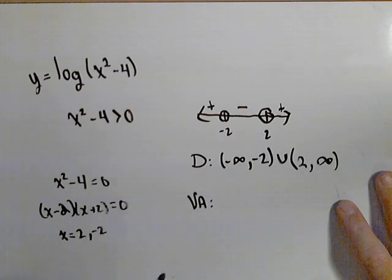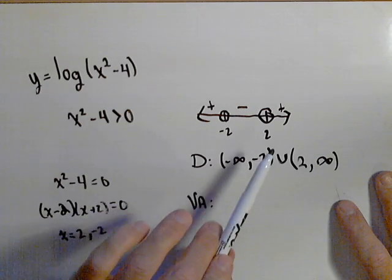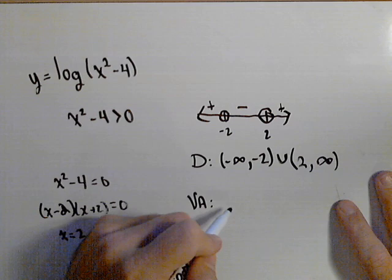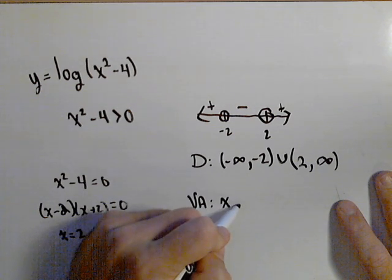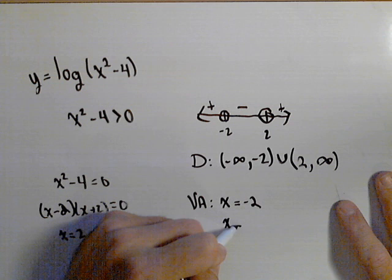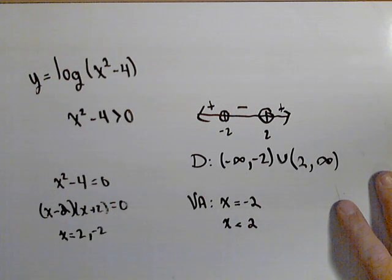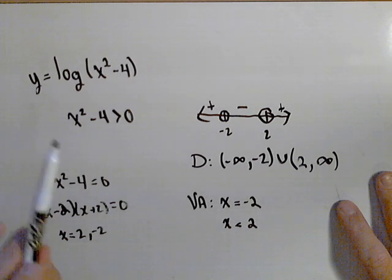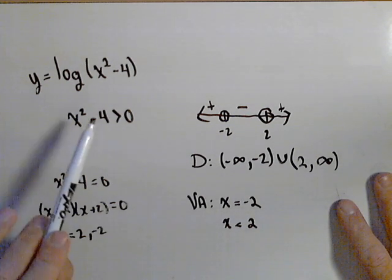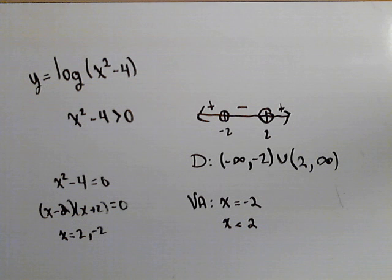Now for vertical asymptotes, we actually have two because there's two places where we can get a zero in the log. They're going to occur at negative two and we're also going to have one at positive two. So it's very possible to have more than one vertical asymptote if you have more than one value that makes a zero inside the argument of your log.